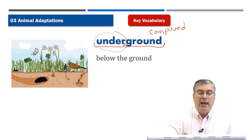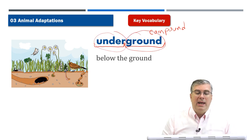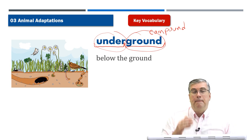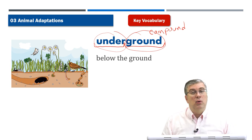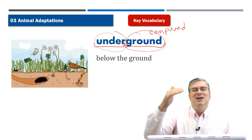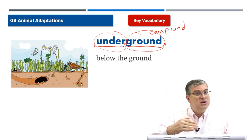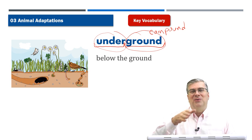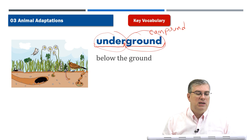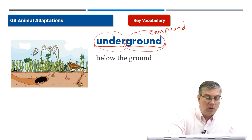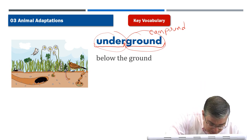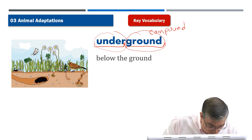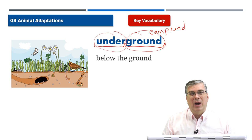We've joined two words — under and ground — to make one word, meaning below the ground. If you use the subway in your city, you travel underground. Sub means under, way is path, so subway is another compound word. And many animals, of course, live underground: ants, worms, caterpillars, moles, and other animals that make their homes in the ground.